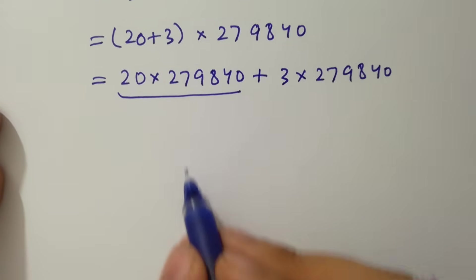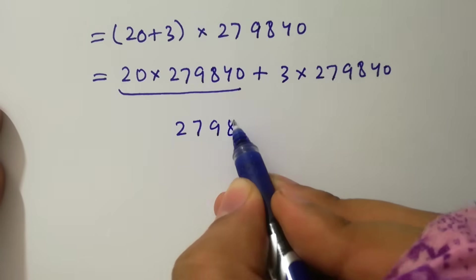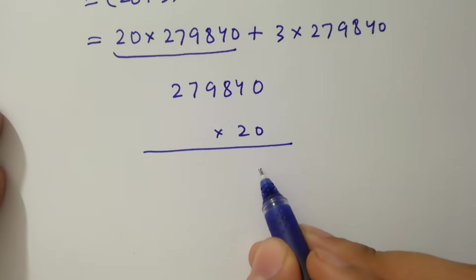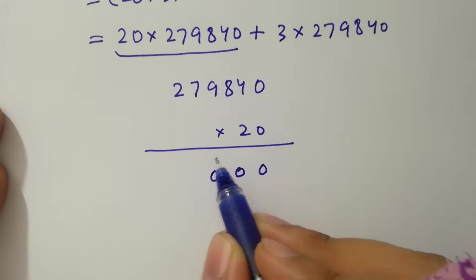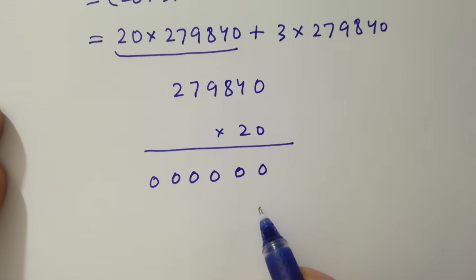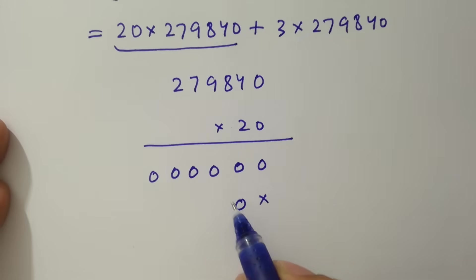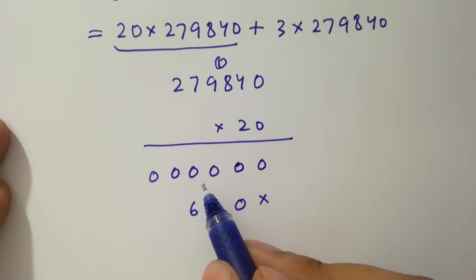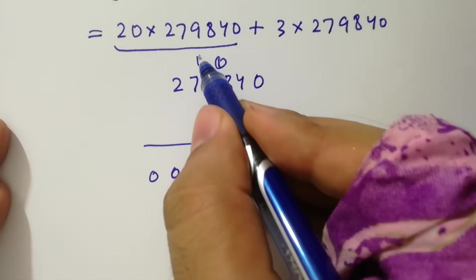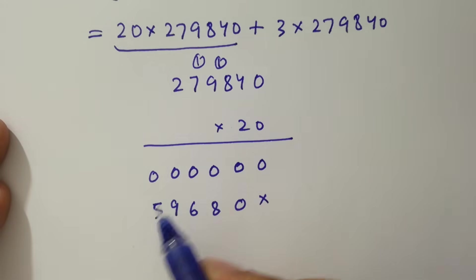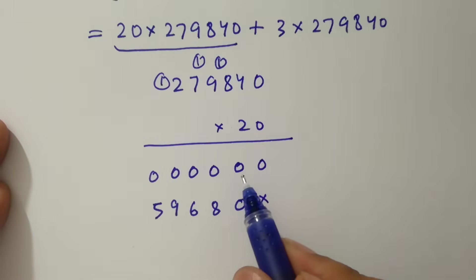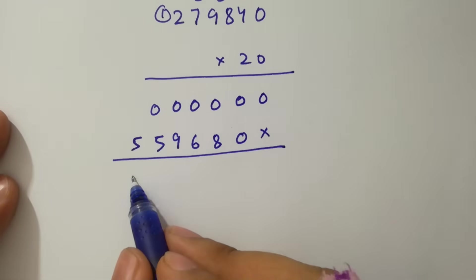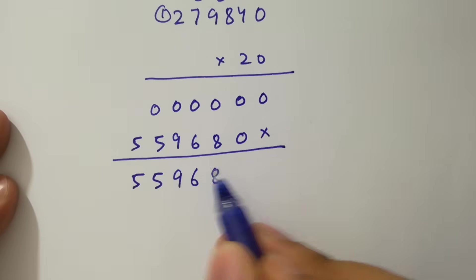First, multiply 279,840 by 20. Going digit by digit: 0 times 20 is 0, 4 times 2 is 8, 8 times 2 is 16 (write 6 carry 1), 9 times 2 is 18 plus 1 is 19 (write 9 carry 1), 7 times 2 is 14 plus 1 is 15 (write 5 carry 1), 2 times 2 is 4 plus 1 is 5. So 279,840 times 20 equals 5,596,800.